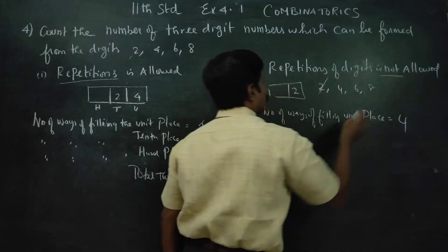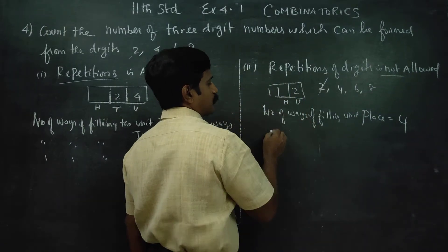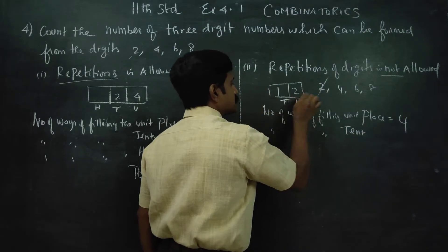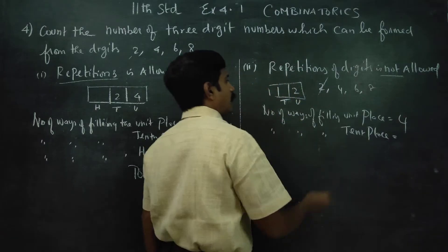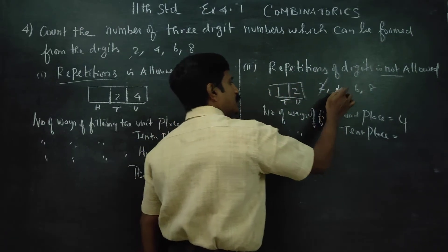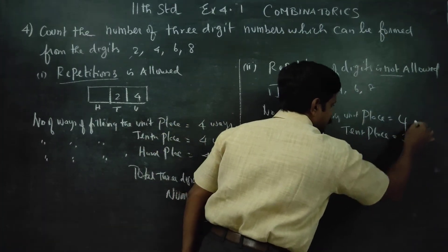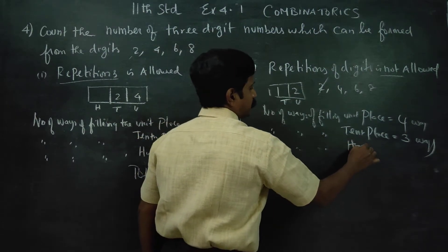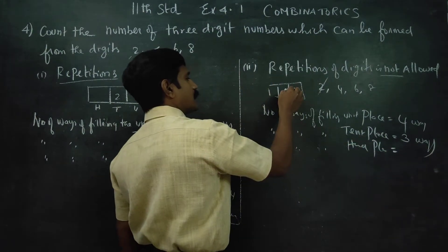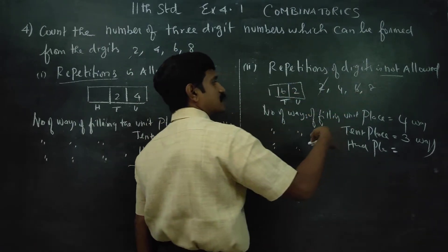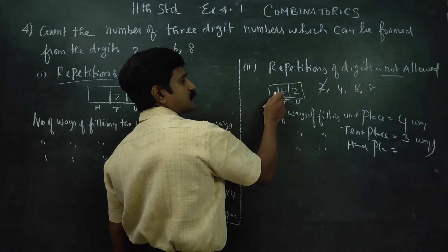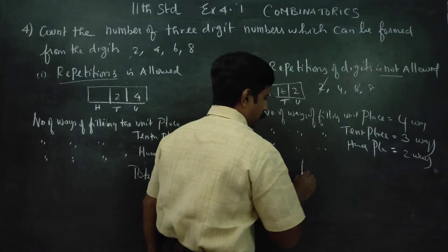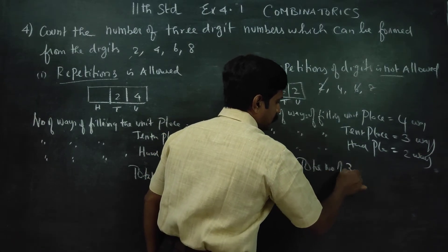Repetition of digits is not allowed. Since one digit is already used in the units place, the number of ways of filling the tens place is 3 ways. For the hundreds place, 2 digits remain, so 2 ways.